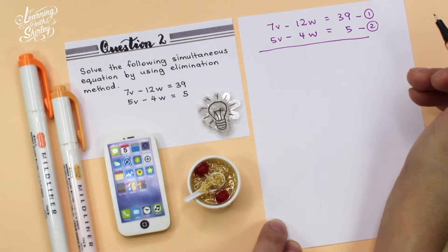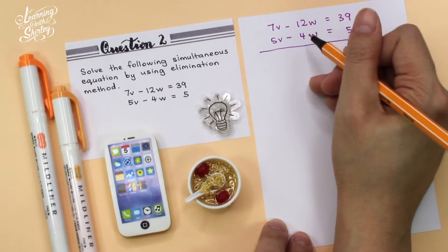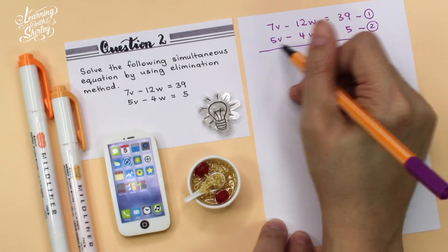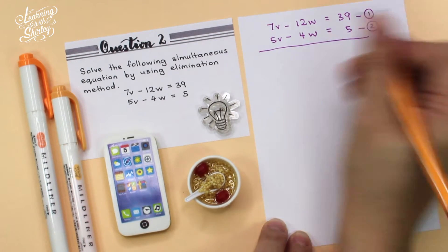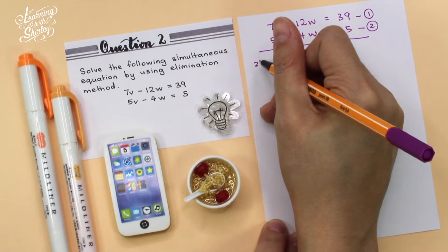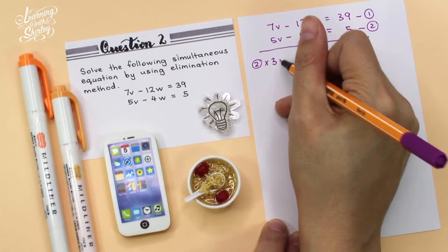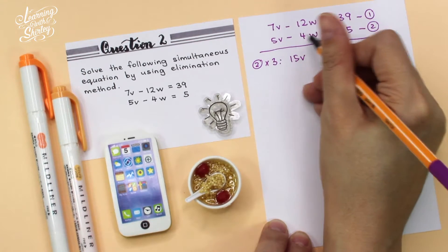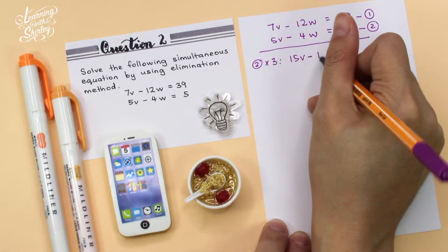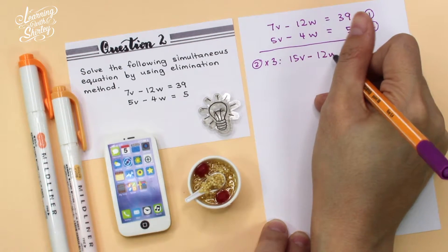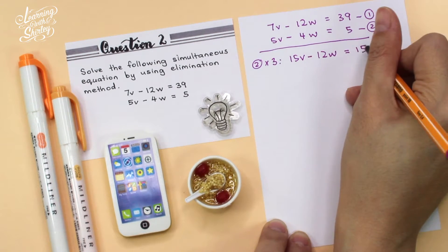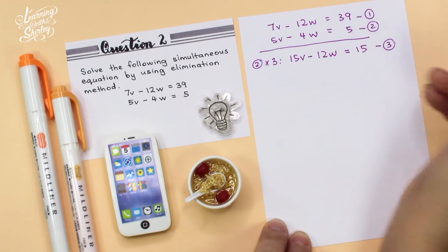To use the elimination method, we need to change the 4w term to become 12w. In order to do that, we multiply all terms in equation 2 by 3. So 5v times 3 is 15v, negative 4w times 3 is negative 12w, and 5 times 3 is 15. This is equation 3.